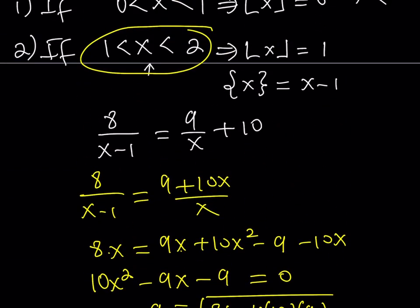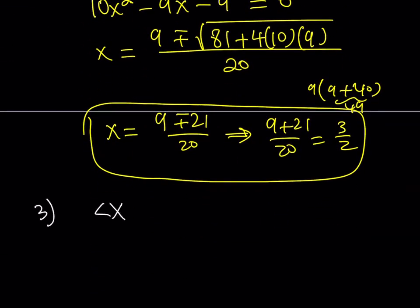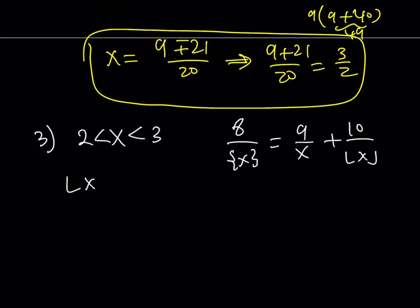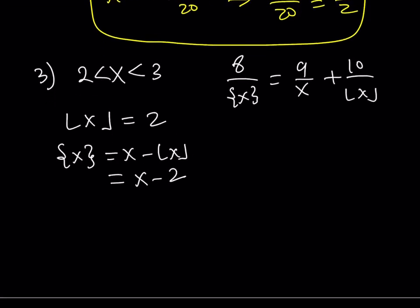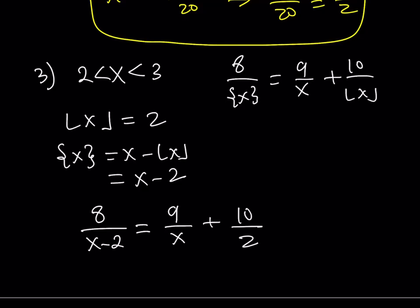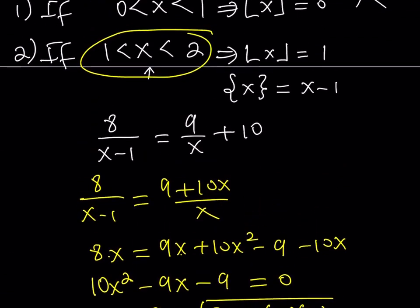Case 3: x is between 2 and 3. Our original equation is 8 over the fractional part of x equals 9 over x plus 10 over the floor value of x. If x is between 2 and 3, its floor value is 2, and its fractional part is x minus 2. Substituting, we get 8 over (x minus 2) equals 9 over x plus 10 over 2. Since 10 divided by 2 is 5, the right-hand side becomes (9 times 2 plus 10x) over 2x, i.e., (18 plus 10x) over 2x.